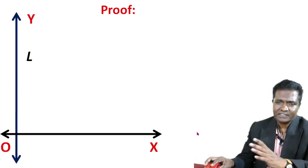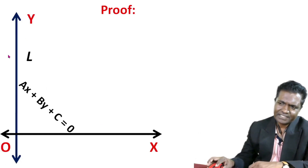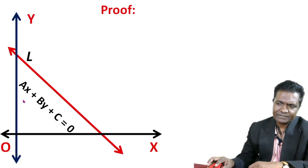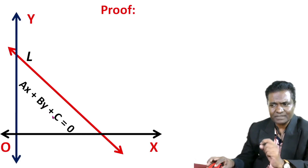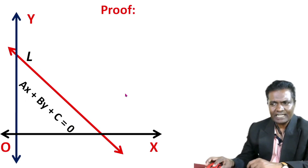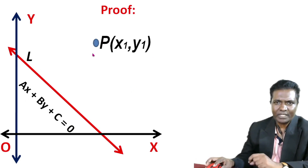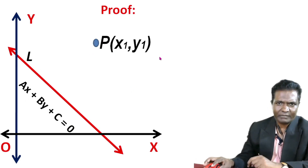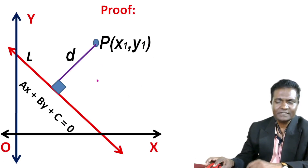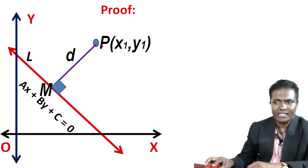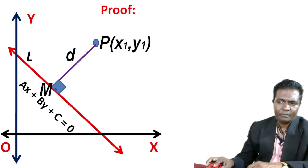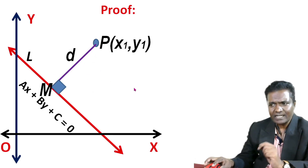Consider a line L whose equation is ax plus by plus c equal to 0, and a point P with coordinates x1, y1. Draw PM perpendicular to the line L. The distance d is the length of PM.